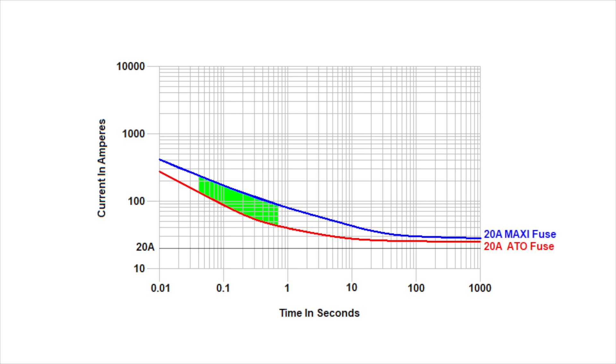For example, a motor start event typically takes about a half a second. A standard 20 amp fuse would allow about 30 amps to pass in one half second, while a slow blow fuse will allow about 100 amps to pass. In other words, a slow blow 20 amp fuse will allow five times the normal current to pass for one half second. This is usually sufficient to allow motor starts.